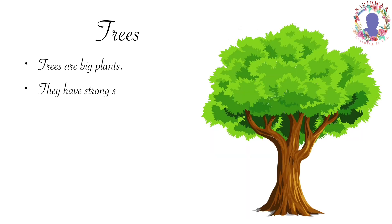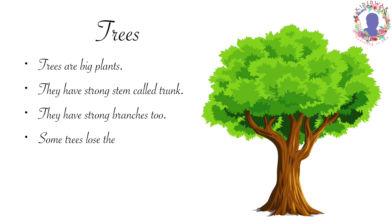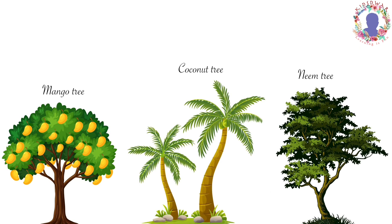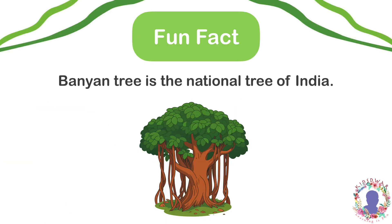Trees are big plants. They have a strong stem called trunk. They have strong branches too. Some trees lose their leaves in the fall while some have leaves all year round. Mango tree, coconut tree, neem tree are some examples of trees. Here's a fun fact: Banyan tree is the national tree of India.